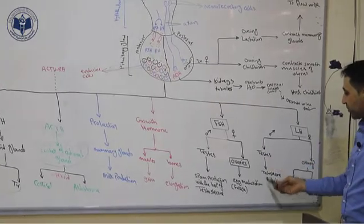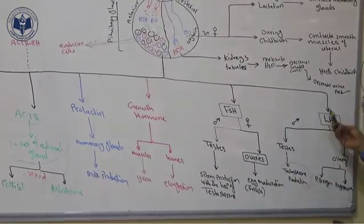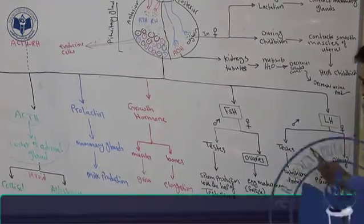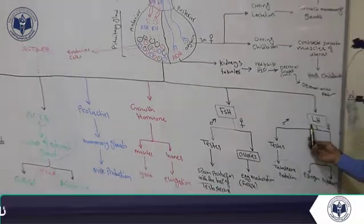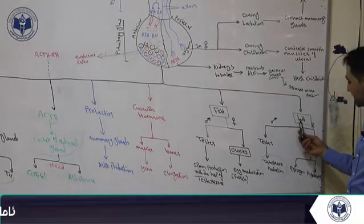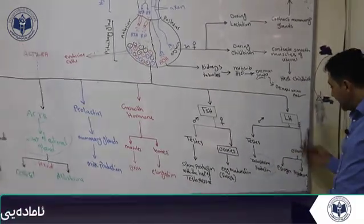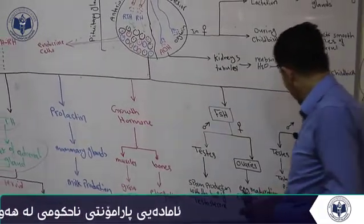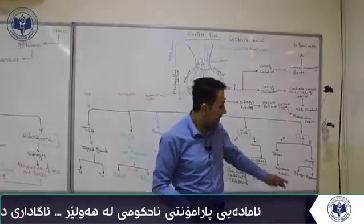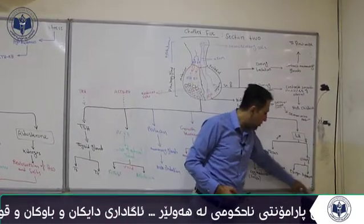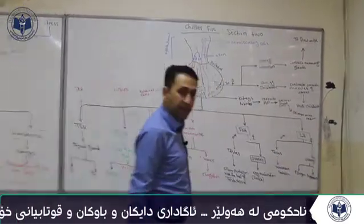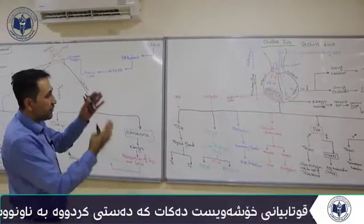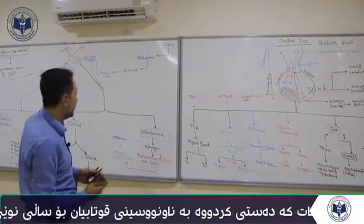LH, like FSH, has targets in both males and females. In males, LH stimulates the testes to produce testosterone — without LH, the testes cannot make testosterone. In females, LH stimulates the ovaries to produce two steroid sex hormones: estrogen and progesterone. Their functions are covered in chapter 6 section 2. This concludes the relationship between the hypothalamus and pituitary gland.